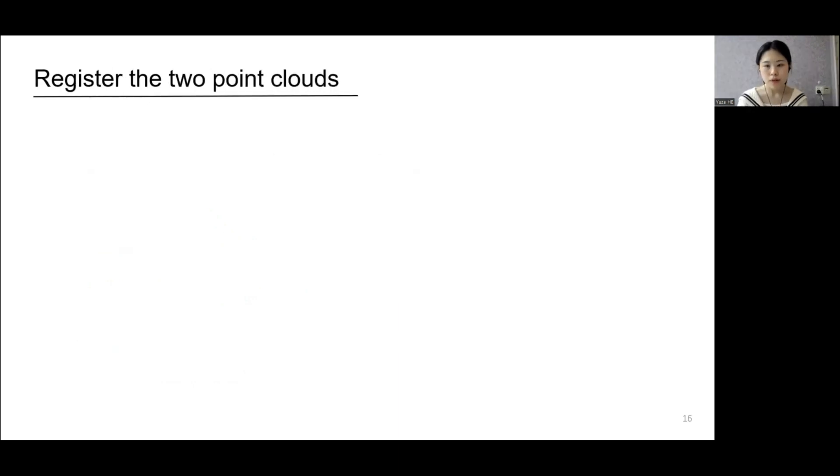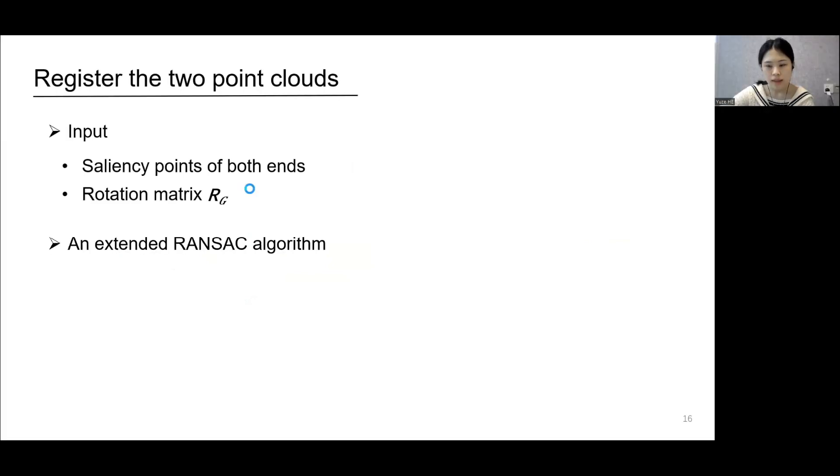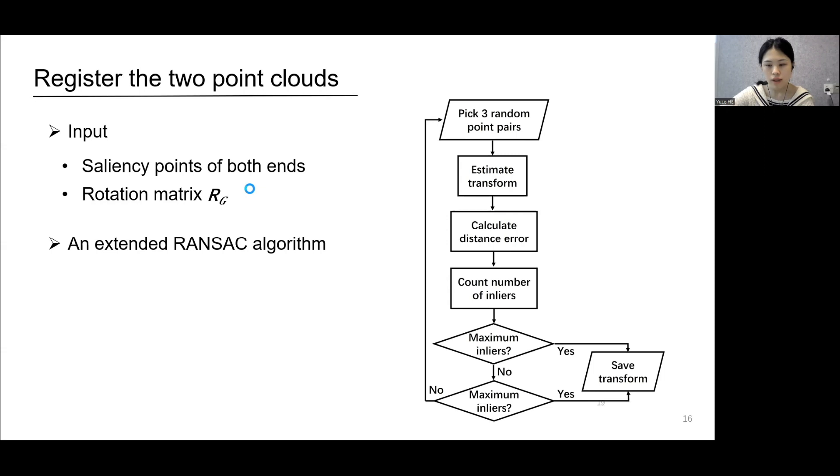The registration module takes the saliency points in both ends as well as the rotation matrix Rg and estimates the final transformation. This is the flowchart of the original RANSAC algorithm. We propose two heuristics to greatly accelerate the classic RANSAC algorithm.